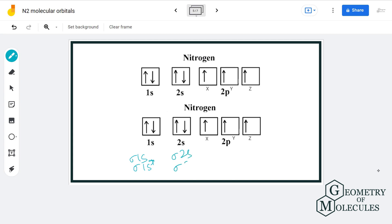1s will combine and form sigma 1s and sigma 1s star. 2s will combine and form sigma 2s and sigma 2s star. 2px will combine and form sigma 2px and sigma 2px star. Similarly, pi 2py and pi 2py star will be formed, and pi 2pz and pi 2pz star will be formed.